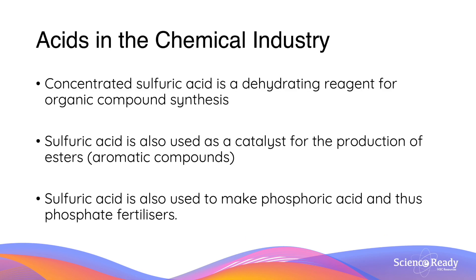So acids in the chemical industry — what do we use them for? Concentrated sulfuric acid is used as a dehydrating agent for organic compound synthesis. Sulfuric acid can also be used as a catalyst for the production of esters, or for making phosphoric acid and thus making phosphate fertilisers.